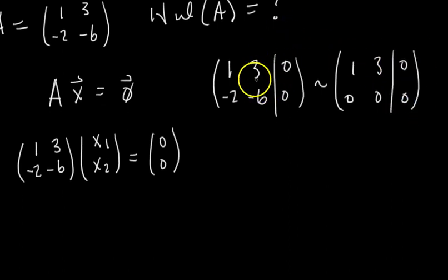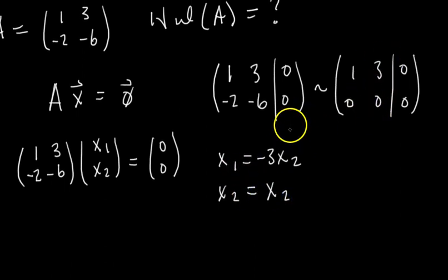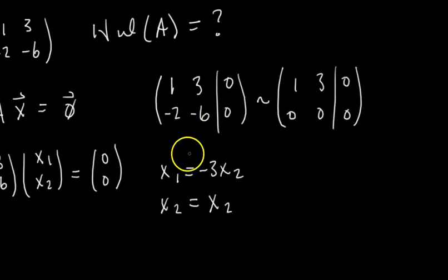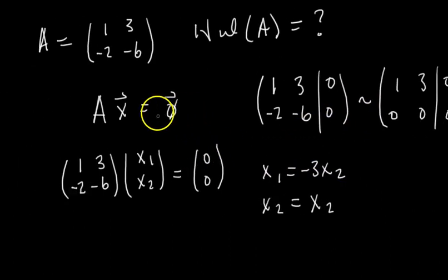And then we write the solution to this system of equations in parametric vector form. So then we would say something like x1 equals negative 3x2, right? I move this 3 over. And then x2, look at the x2 column, there's no pivot there. So x2 is a free variable, so we say x2 equals x2.